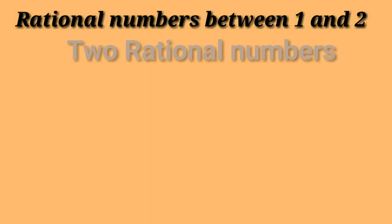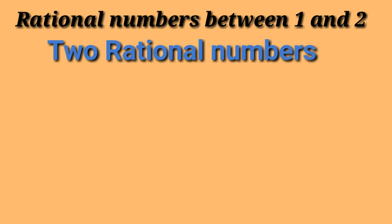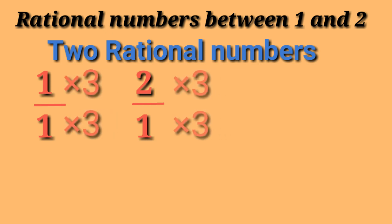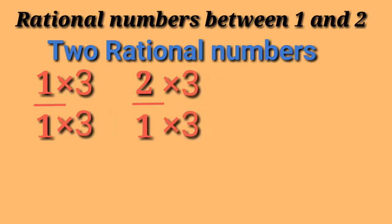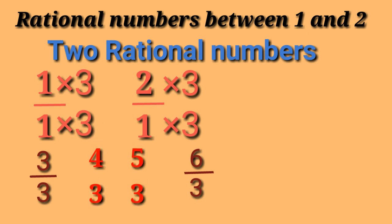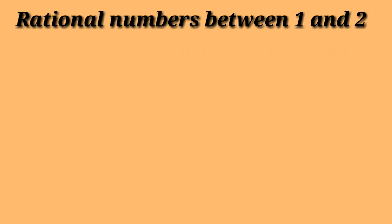If we want two rational numbers between 1 and 2, there is another method. We need two rational numbers, so what comes after 2? It's 3. So we multiply the numerators and denominators by 3: 1 times 3 by 1 times 3, and 2 times 3 by 1 times 3. If we multiply, we get 3 by 3 and 6 by 3, and the numbers between them are 4 by 3 and 5 by 3.